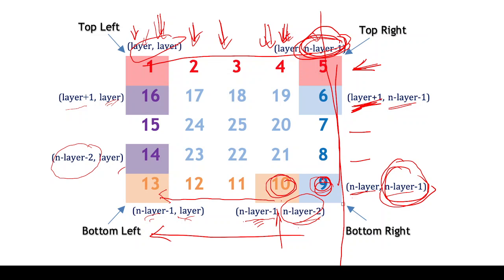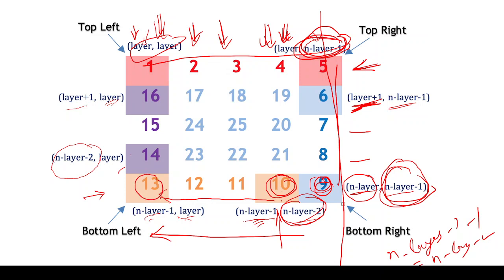When we go to direction 3, the row at the bottom is n minus layer. We start the column at n minus layer minus 2 and decrement. For direction 4, going bottom to top, this column remains the same — it's 'layer'. What is changing is the row, which goes upward from n minus layer minus 1 back toward layer plus 1.